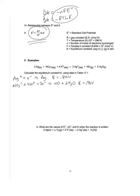Here I see the overall reaction again. The silver reaction is both flipped and multiplied by three — multiplying by three does not change the voltage, but flipping it makes it negative 0.80 volts. The other reaction does not flip. Adding those together gives a positive 0.16 volts as the cell potential.